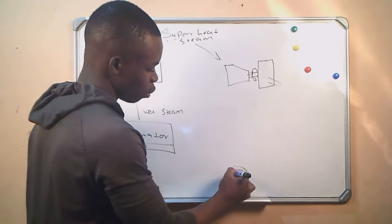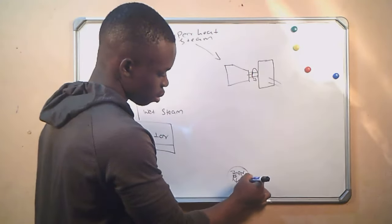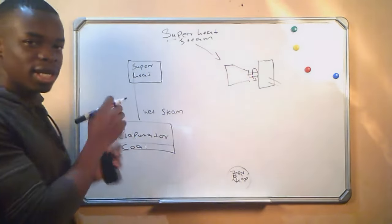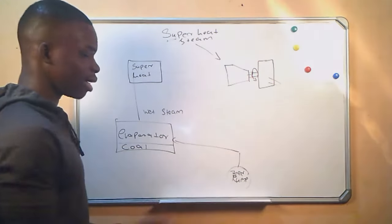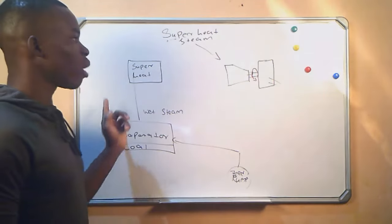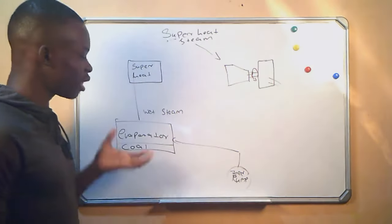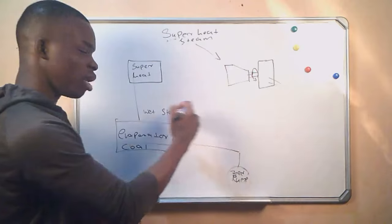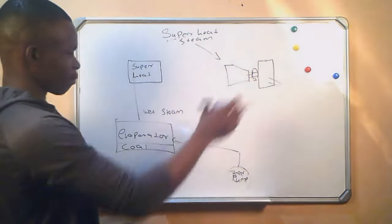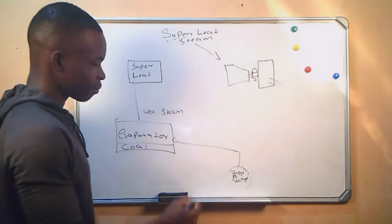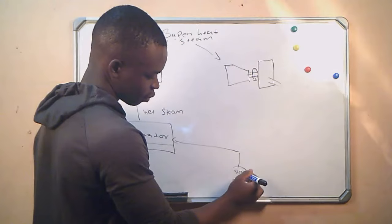Now we have a pump, which is a feed pump. As the water in the evaporator is converted to steam, we need to keep on adding water into the evaporator because we want this process to be carried out continuously. As the water is converted to steam and it leaves, we need to be adding water so that it can also be converted to steam and taken to the turbines. We call this feed water, and we call this the feed pump.